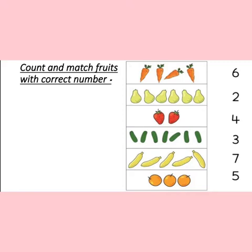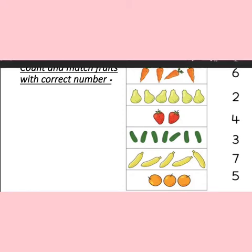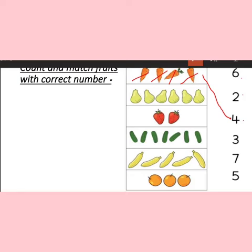We will start counting the fruit in the first row. Let's start counting with me: one, two, three, four. How many are there? Four. So students, find number four with me. Is it number four? No. Is it number four? Yes, it is number four. So we will draw a line to match with number four.